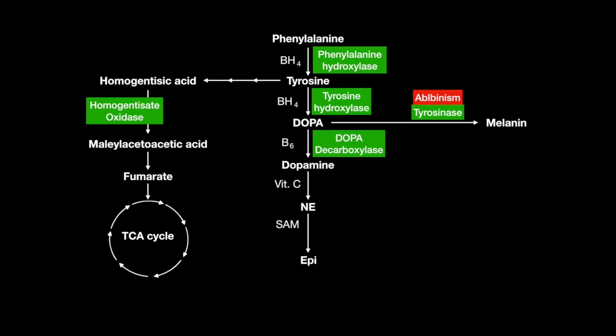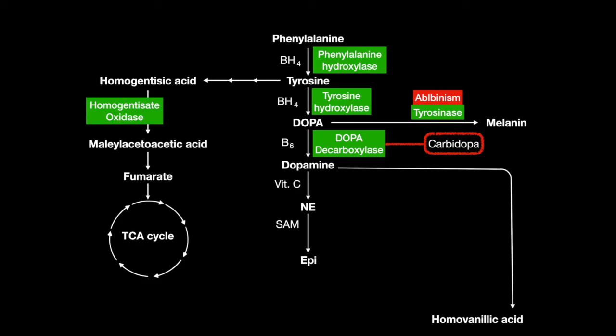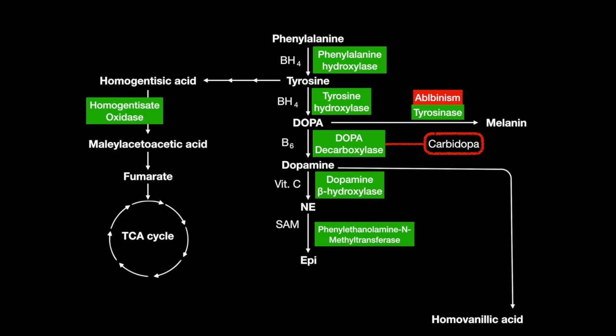DOPA decarboxylase catalyzes DOPA to dopamine, with B6. It is inhibited by the drug carbidopa. Dopamine releases the metabolite homovanillic acid, which can be used to test for dopamine levels. The vitamin C-requiring enzyme dopamine beta-hydroxylase converts dopamine to norepinephrine. Then SAM-requiring phenylethanolamine N-methyltransferase converts norepinephrine to epinephrine. Both epinephrine and norepinephrine release the metabolite vanillylmandelic acid.